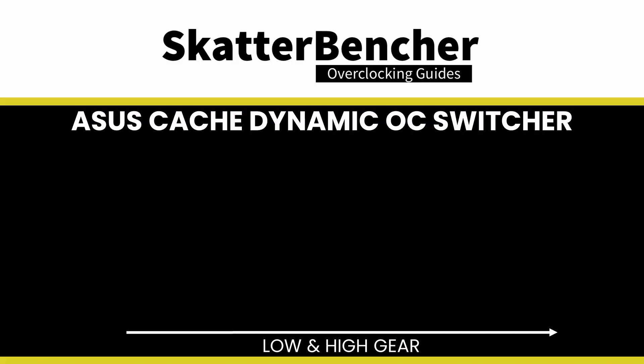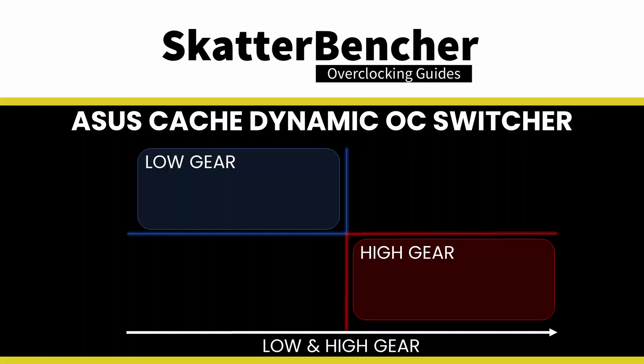However, as the name already implies, Cache Dynamic OC Switcher isn't about optimizing the CPU frequency — it's about optimizing the ring frequency. Here's how it works: you define two so-called gears, high and low gear, and a trigger switching point.